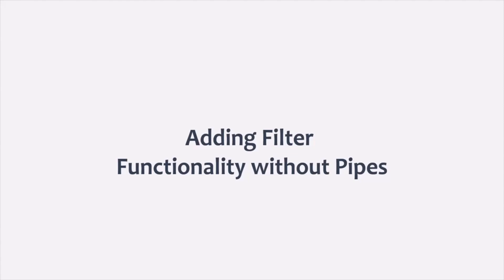In the last lecture, we learned what is a pure and impure pipe in Angular and why we should not use pipes for data filtering or sorting. Now we will try to understand how we should implement sorting or filtering logic in Angular without using pipes. We can write the filtering or sorting logic in the component class itself, or if we want to use it in multiple places, we can write it in the service class.